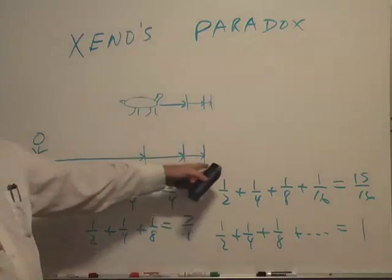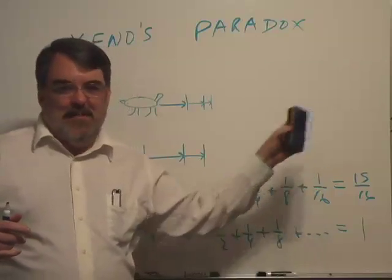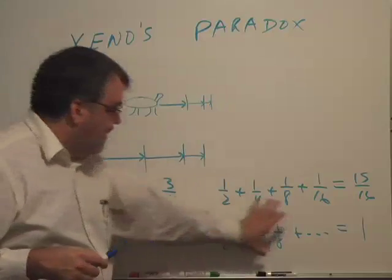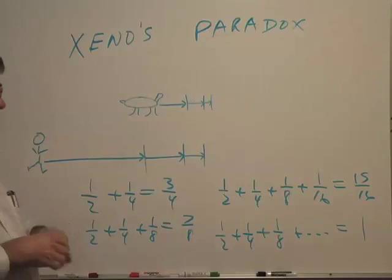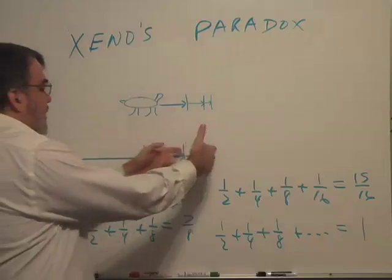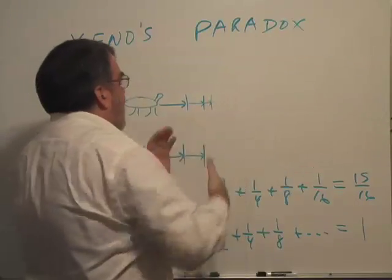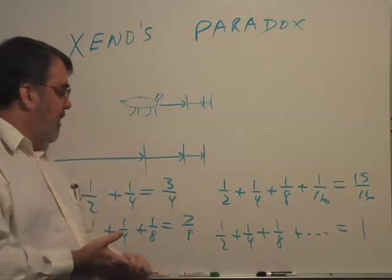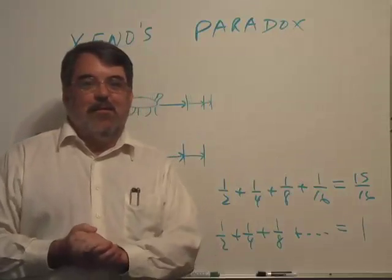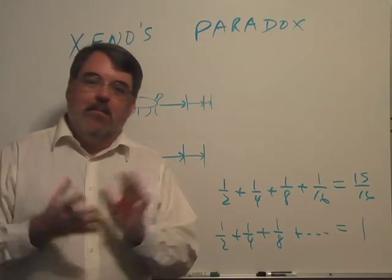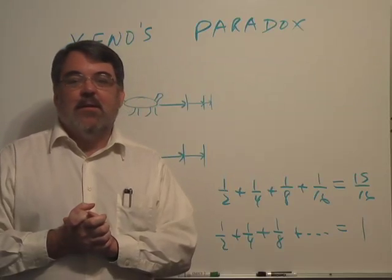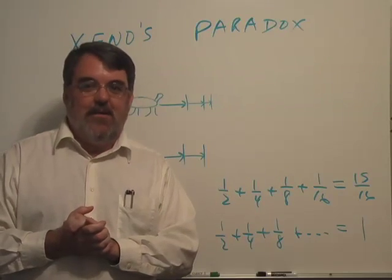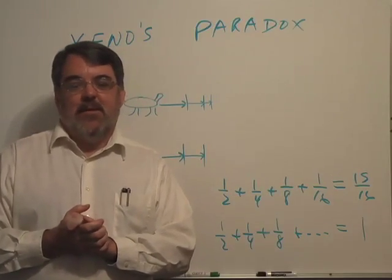Yes, Achilles is going to catch the turtle and then pass it. I wanted you to see the similarity of this argument and Zeno's paradox, because we're adding these distances and even though there are infinitely many of them, they sum to a finite value. We'll justify this more formally in a future video. There's an awful lot to say about infinity and all the rather weird things that come up about it.